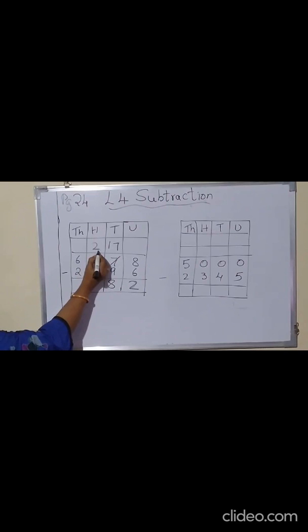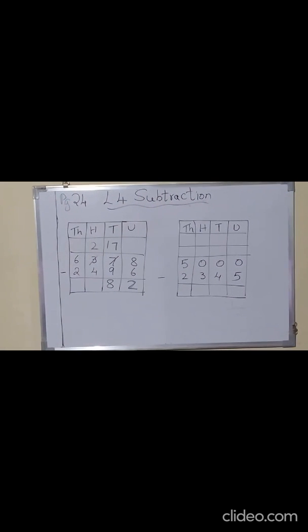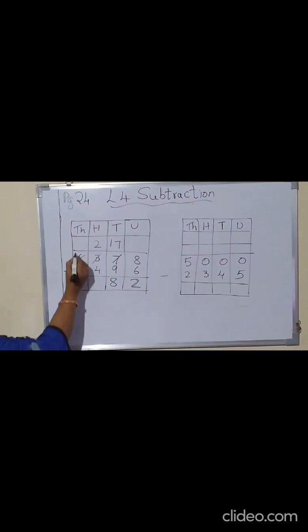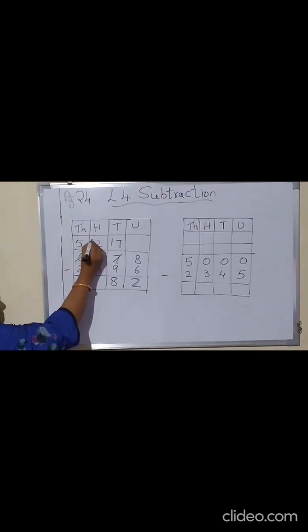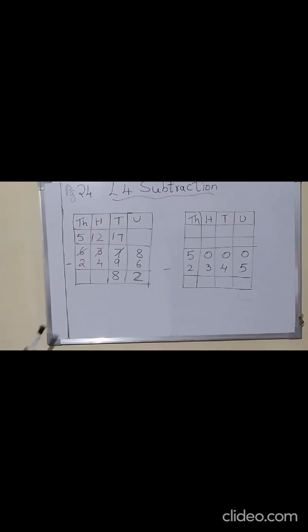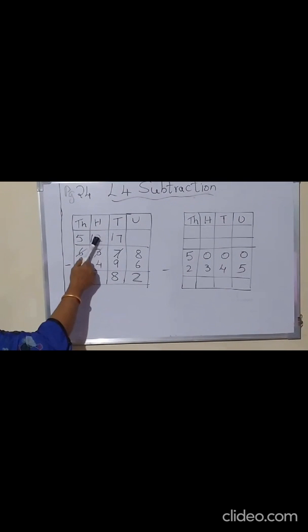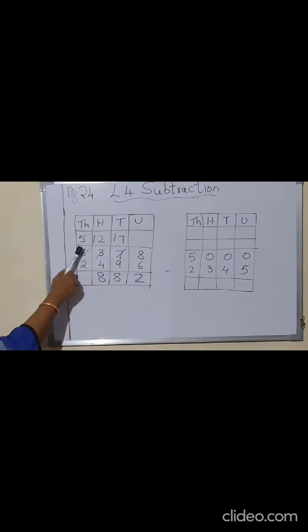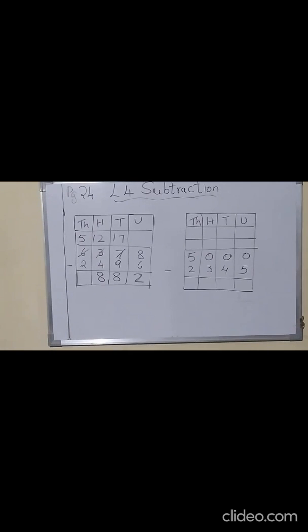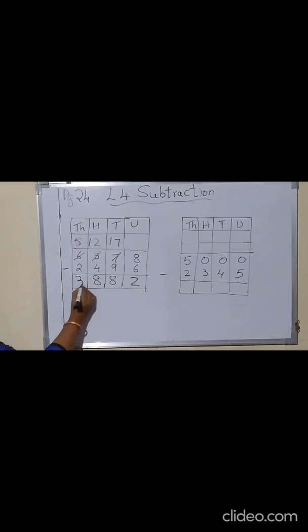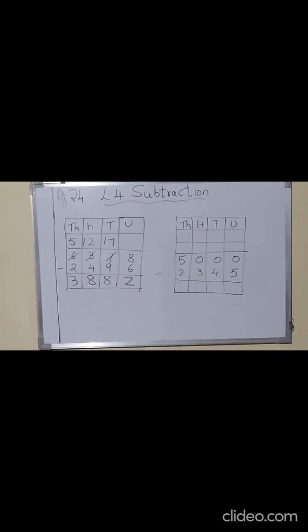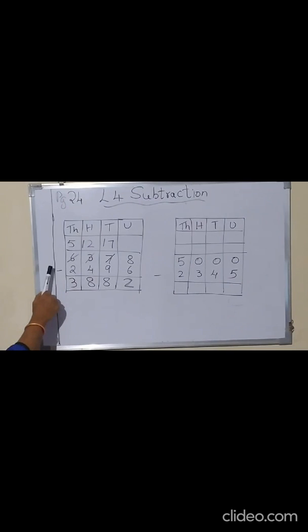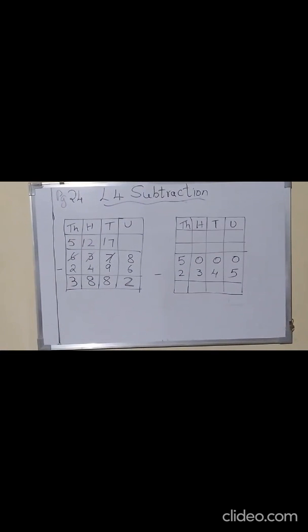Now again here we cannot minus from the 3 because we have cut 3 and written 2. So we have to minus 2 minus 4. Again 2 is small — from 2 we cannot cut 4. So what do we do? Take 1 from the neighbor — that is from 6, when we cut 1 it will become 5 and give it here, so it becomes 12. Now after 4, count up to 12 — you will get the answer 8. And here 5 minus 2, the answer will be 3. Only when the number is small, you have to take from the neighbor, borrow 1 and give it to the number and do the sum.